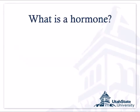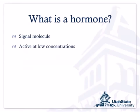What is a hormone? A hormone is a signal molecule — a molecule that's produced in a plant to signal some type of response. It's usually active at very low concentrations. It's endogenous, meaning it is produced within the plant and transported to another part of the plant and then causes a response. Endogenous means it comes from within.